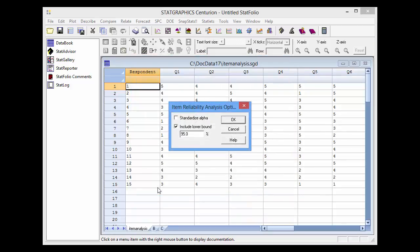The second dialog box gives me a choice of whether to calculate a standardized version of alpha or an unstandardized version. Since all of the questions here are on the same scale, I'll stick with the unstandardized alpha. I can also request a lower bound for alpha, and I have. I've asked for a 95% lower bound.